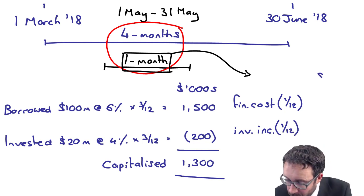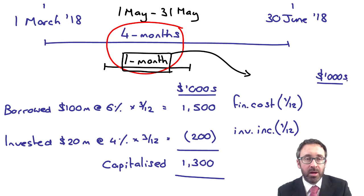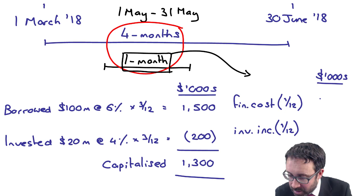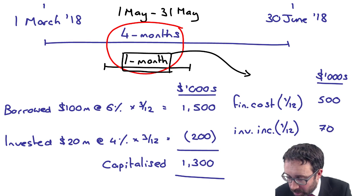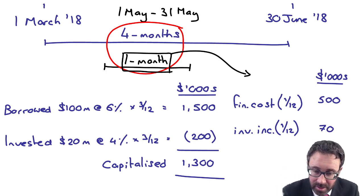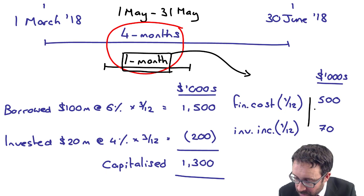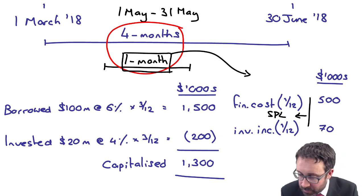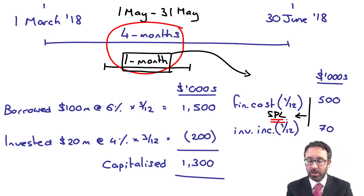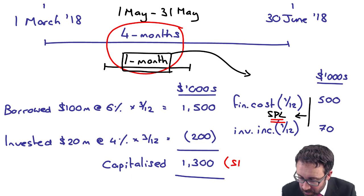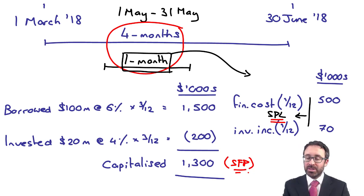Working in thousands as before: one twelfth of the borrowings is 500, and the investment income for one twelfth is 70. Both of those amounts would appear within the statement of profit or loss, while the amount that is capitalised would appear on the statement of financial position.